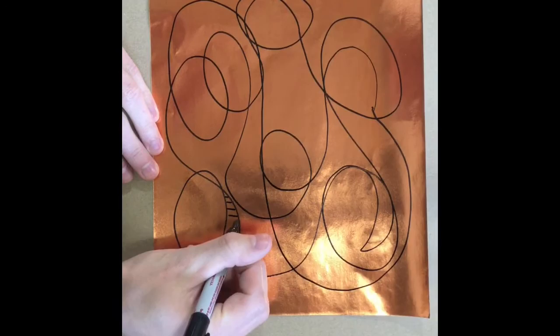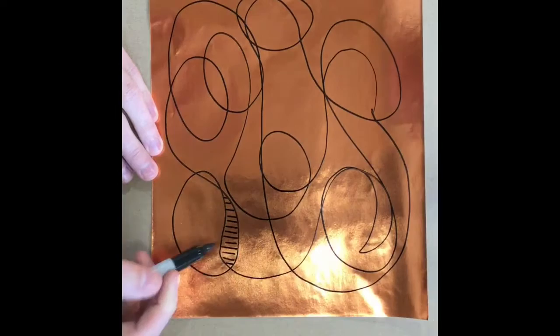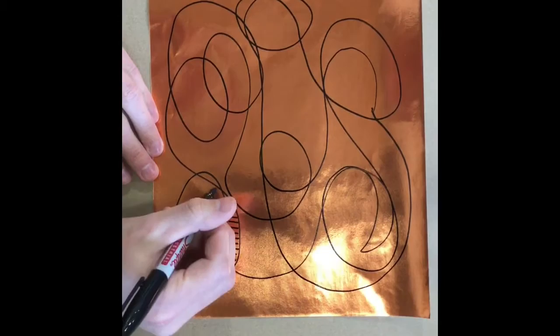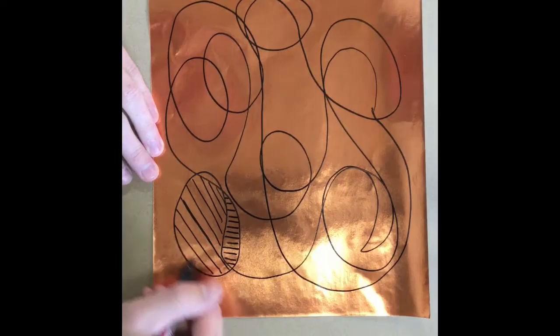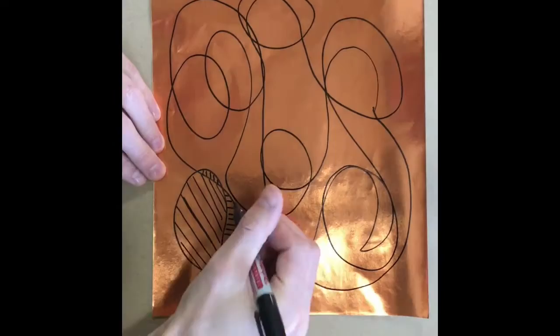Notice that when I make my lines I keep them kind of close together. I also have my line go from the top of the section all the way to the bottom. You need to fill in all of these sections. Use a variety of different lines too between your verticals and horizontals and diagonals.